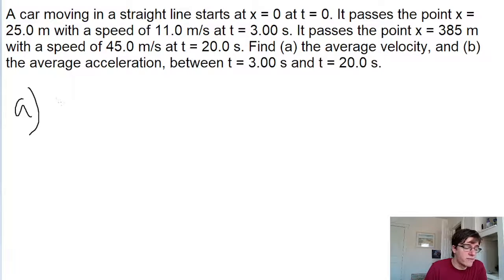For the average velocity, remember that average velocity has a formula of the change in distance between the two points divided by the change in time. That would be the final position minus the initial position divided by the final time minus the initial time.